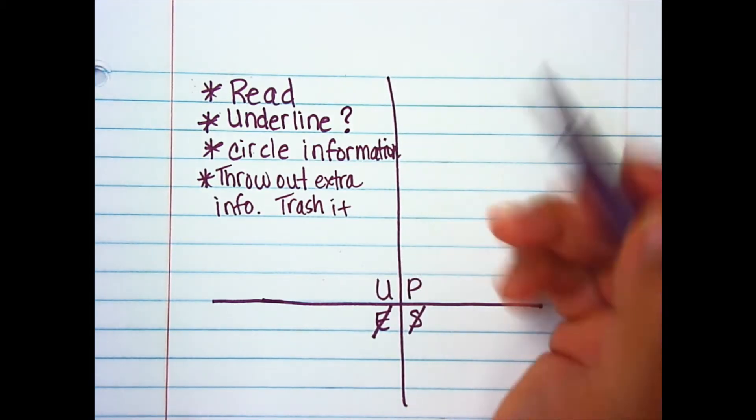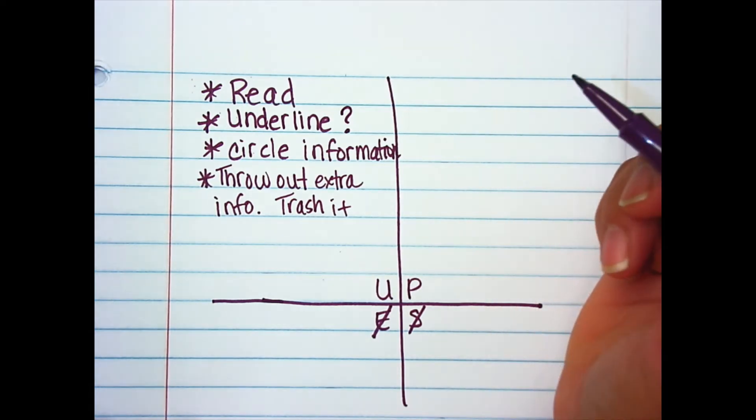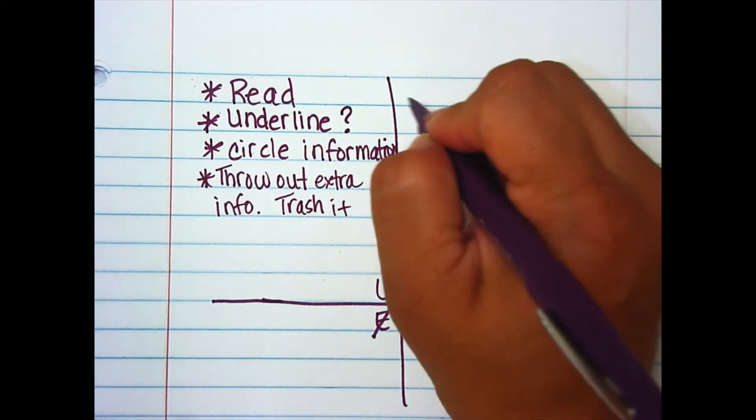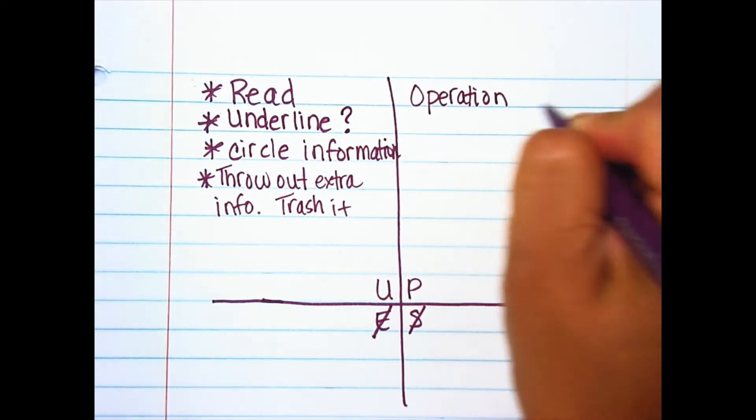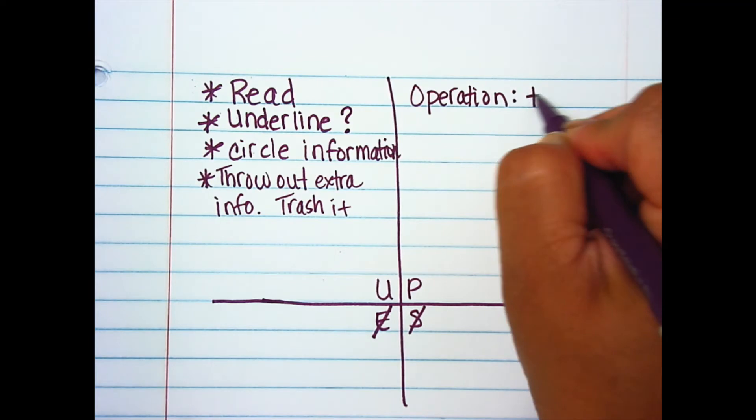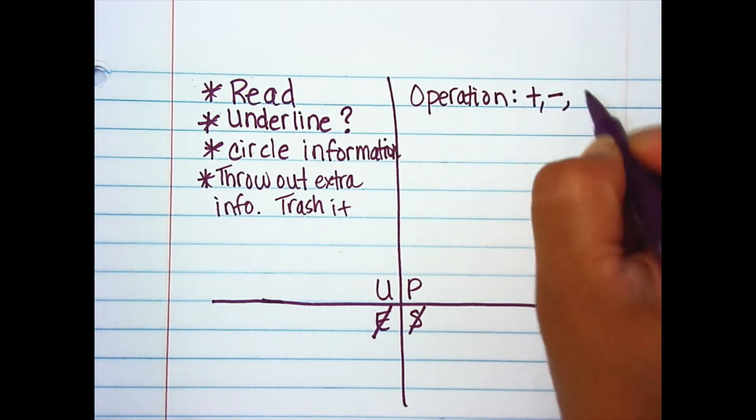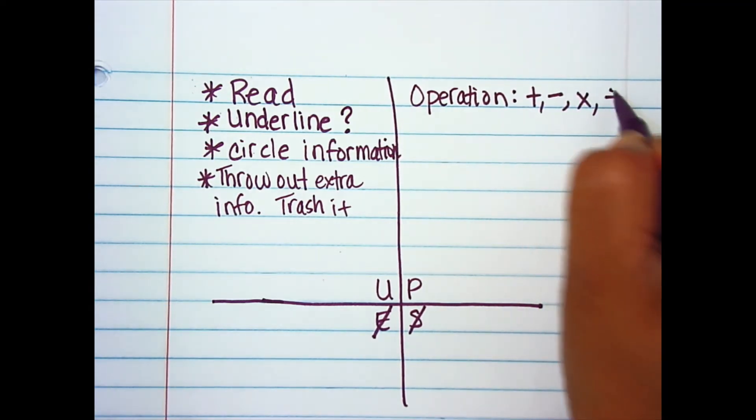After we do our understand, we do our planning. In our planning, we have our O, which is our operation. And there is where we need to decide: am I adding, am I subtracting, am I multiplying, or am I dividing?